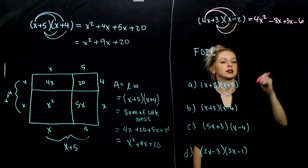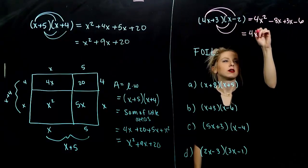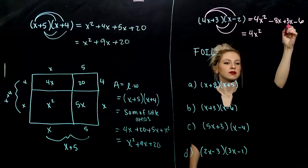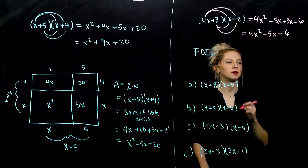We always want to write in descending order and combine all like terms. So, I've got negative 8x and positive 3x. So, I'll have negative 5x all together and minus 6.